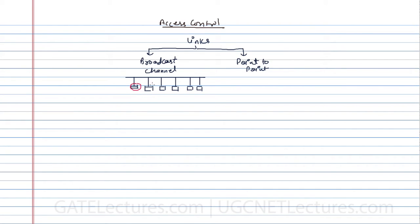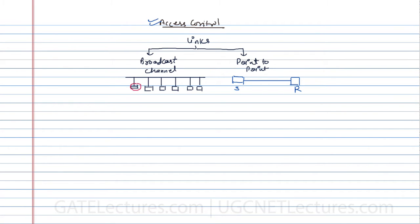When we discuss about point-to-point channel, if this is a sender and this sender is connected to a single receiver, then one point is connected to another point — that is called a point-to-point channel. Now, if two computers in the same network are sending or broadcasting data at the same time, there might be a collision.